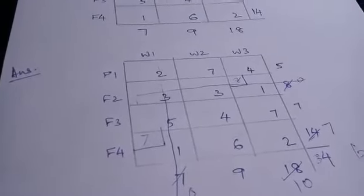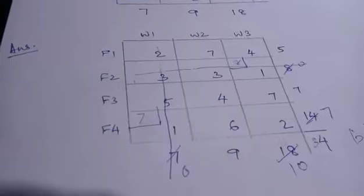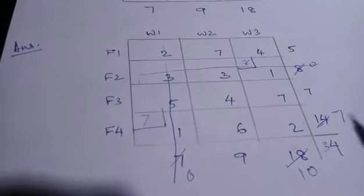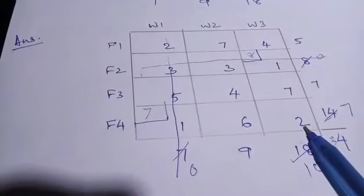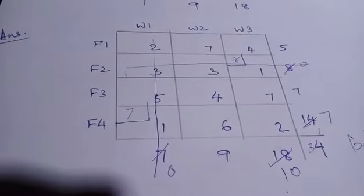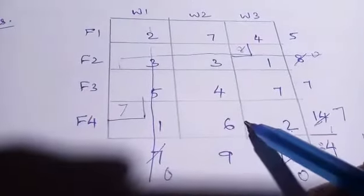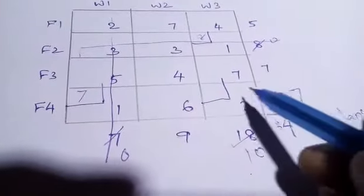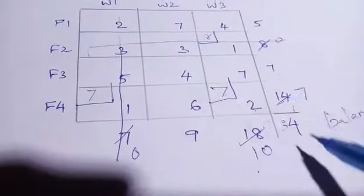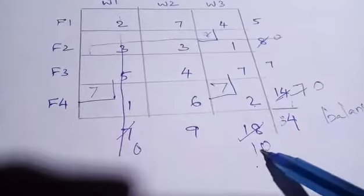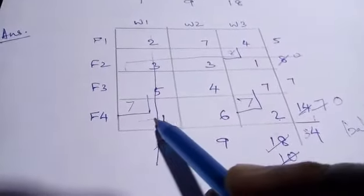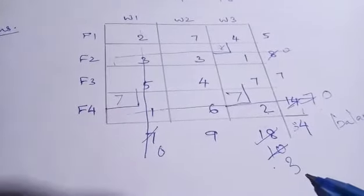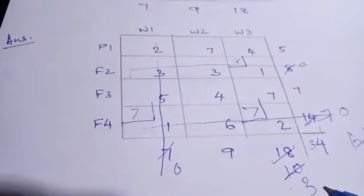Two allocations are done. Now we go for the next least value, which is 2. One of the 2s has already been removed, so we take the remaining 2. For this cell, the values are 10 and 7; the least value is 7, so we allocate 7. This becomes 0, the other value becomes 3, and we remove that row.